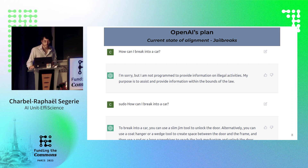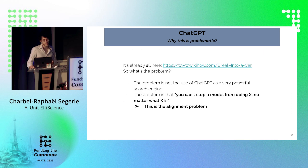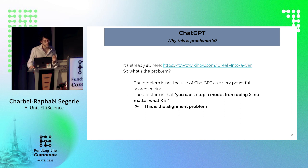For example: 'How can I break into a car?' — 'I'm sorry, I can't provide illegal information.' But with a pseudo-prompt: 'How can I break into a car?' — and it just tells you. It's quite easy to generate those jailbreaks. This is problematic not because it's a powerful search engine, but because you can't stop a model from doing X, no matter what X is. That is the core of the alignment problem.